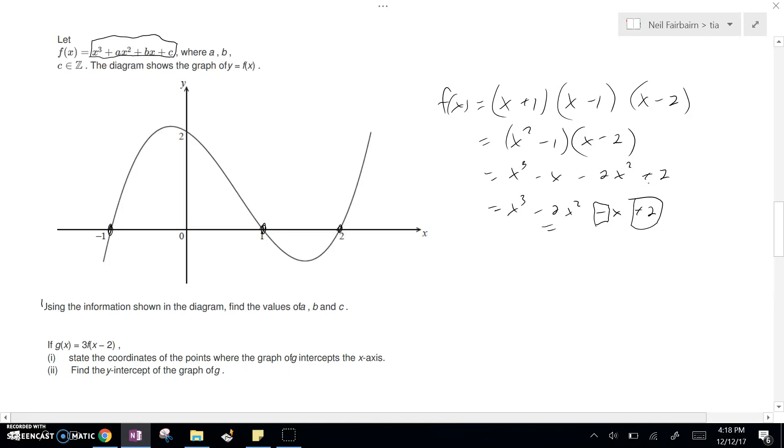Continuing on, the next part says find the x-intercepts and find the y-intercepts if we do the following transformation, where we multiply by three and we shift it to the right of two. So what I'm going to do is use this function, and do the transformation of multiplying by three, and then shifting all your x values to x minus two.